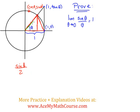Now let's find the area of this sector here. We know the area of that sector is a little bit bigger than the area of the triangle we just talked about. The area of this sector will be θ/2.